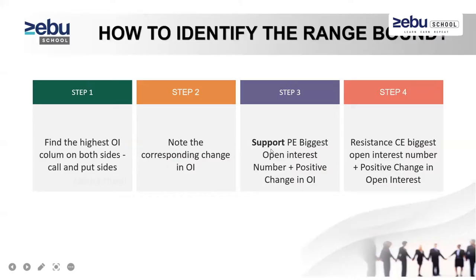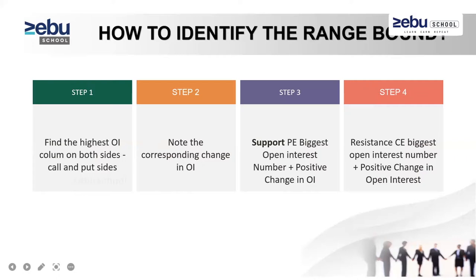Step three is the support side. On the put option side, the highest open interest area is called the benchmark — that put option side acts as the market support range. We need to act based on these levels, and note the positive corresponding changes in open interest on the put side.